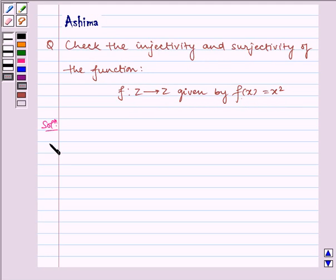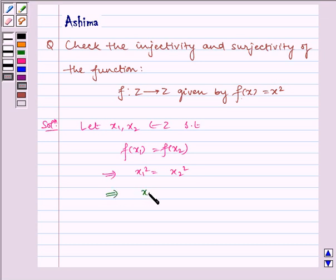Now let us write the solution. Let x1, x2 belong to Z such that f of x1 equals f of x2, which implies x1 squared equals x2 squared, which implies x1 equals plus or minus x2, which implies x1 equals x2 and x1 equals minus x2.